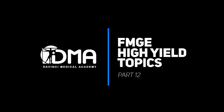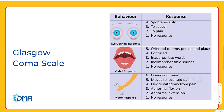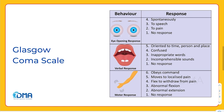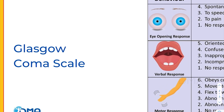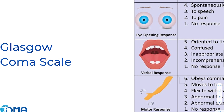Hello everyone, I'm Dr. Adityan. Welcome to the series FMG High Yield. The topic for today is going to be the Glasgow Coma Scale. The Glasgow Coma Scale is used to describe the level of consciousness of patients with traumatic brain injury.